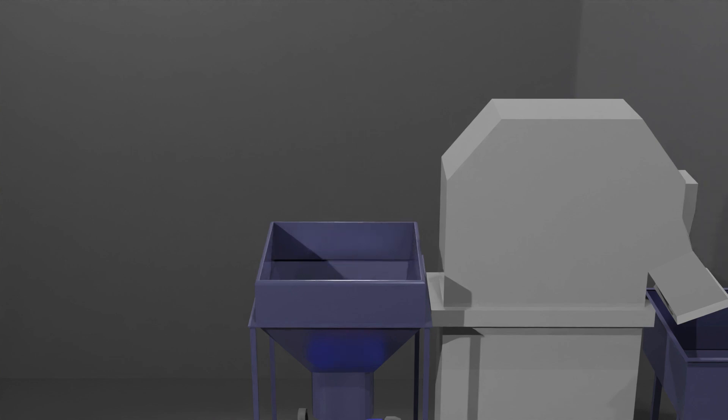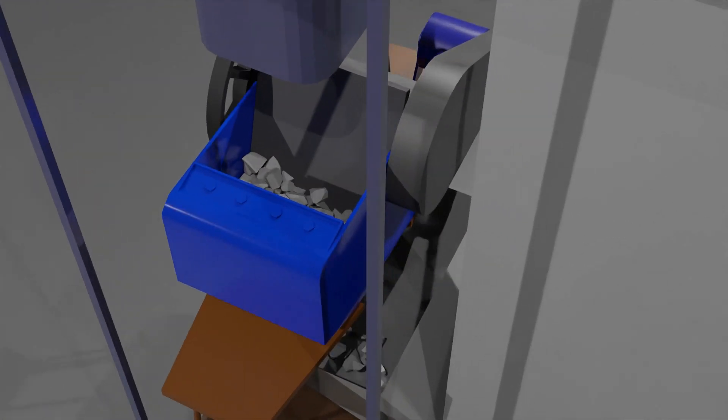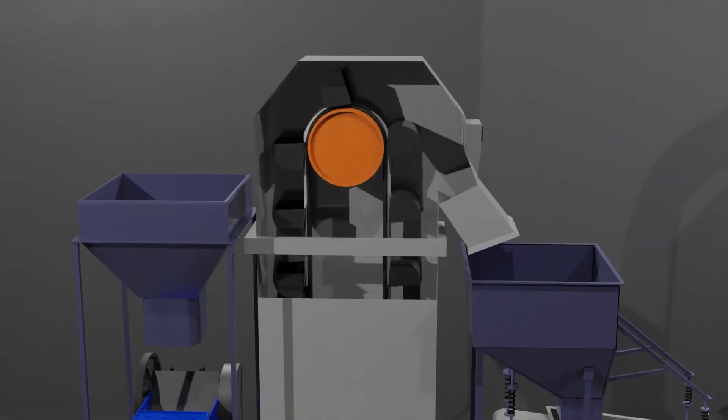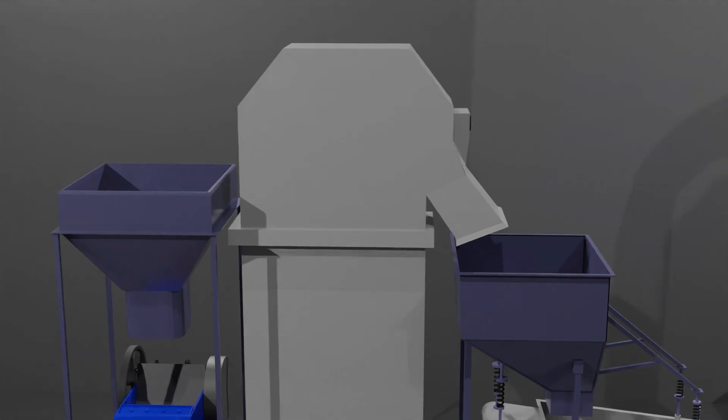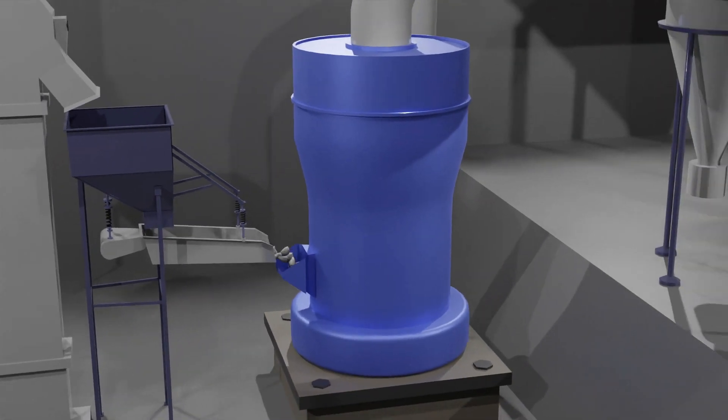In this process broken talcum stones are passed through a jaw crusher. The crusher breaks stone into pieces and feeds them into a bucket elevator. This bucket elevator takes the stones and throws them into electromagnetic vibrating feeder where small and large pieces of stones are separated. In the next stage stones are fed into Raymond mill.